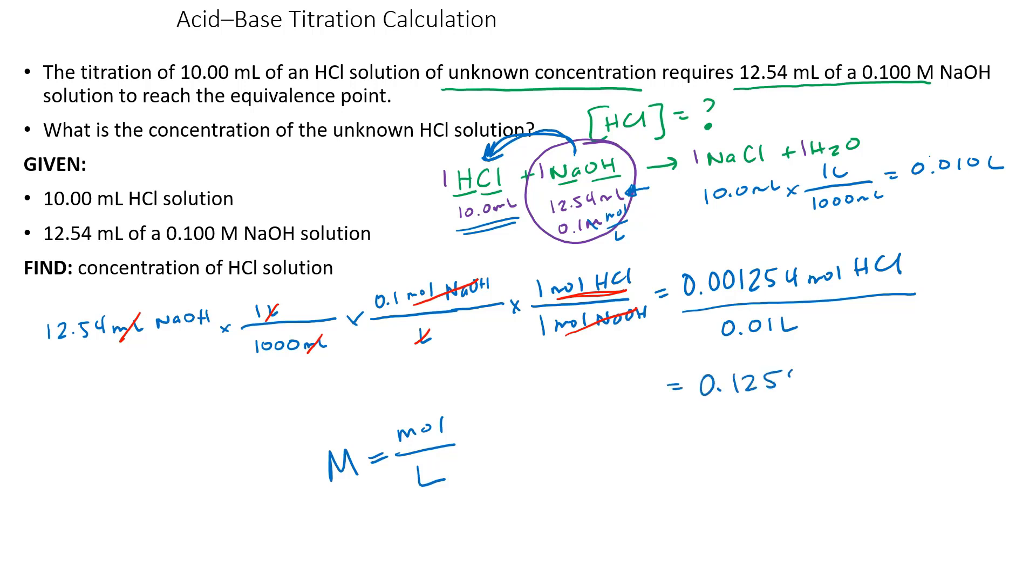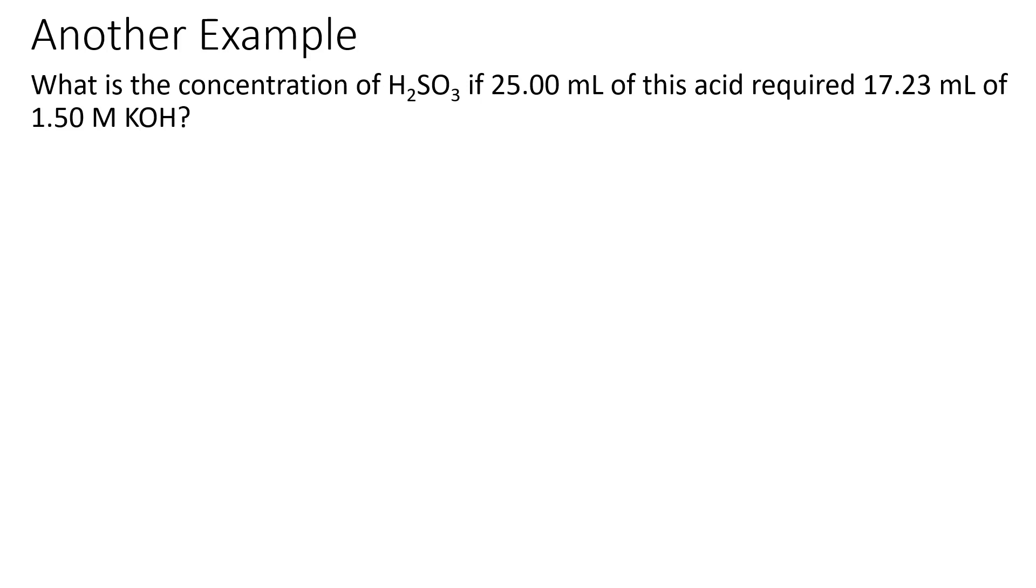One more example. What is the concentration of H2SO3 if 25 milliliters of this acid required 17.23 milliliters of 1.5 molar KOH? First I have to write my reaction. There's my acid and base, and I know that's going to make water. That's going to get rid of these, and then it's going to make the salt from those two ions, so it would be K2SO3. Now I need to balance it. In order to balance it, I'm going to need two of these, and that would make two waters.